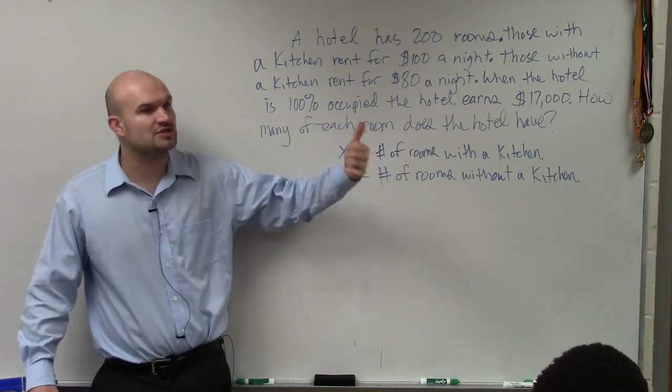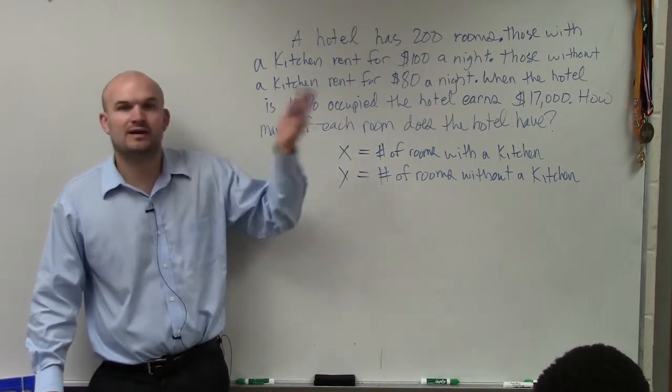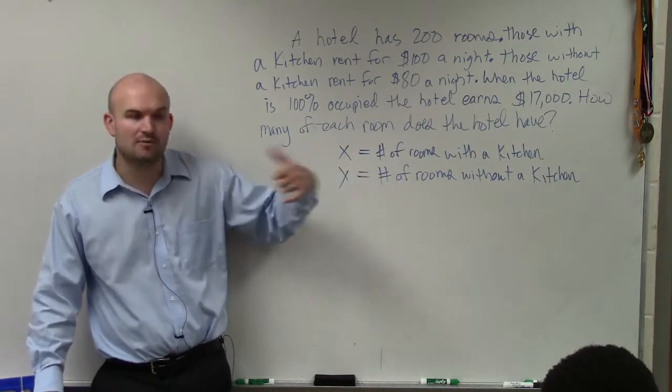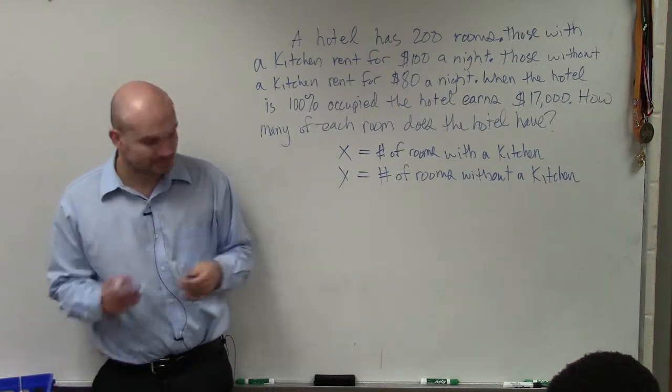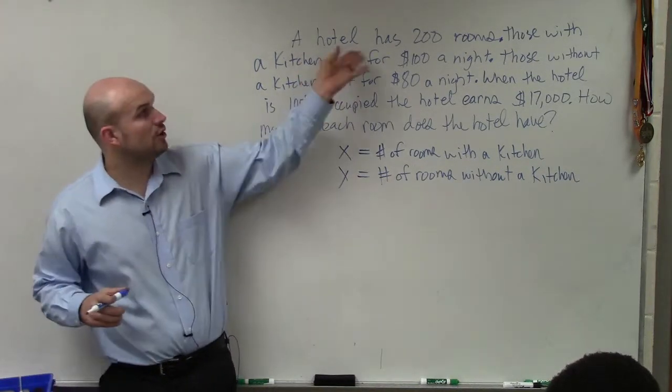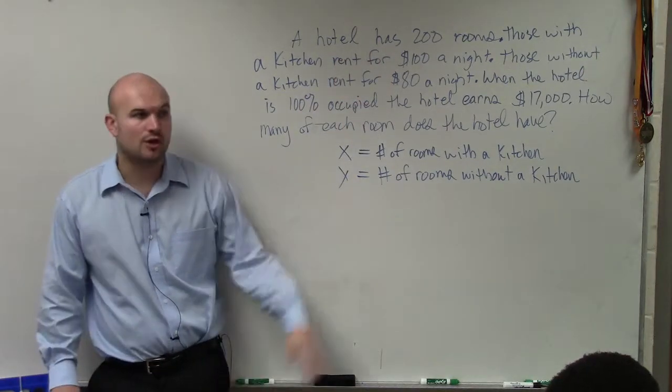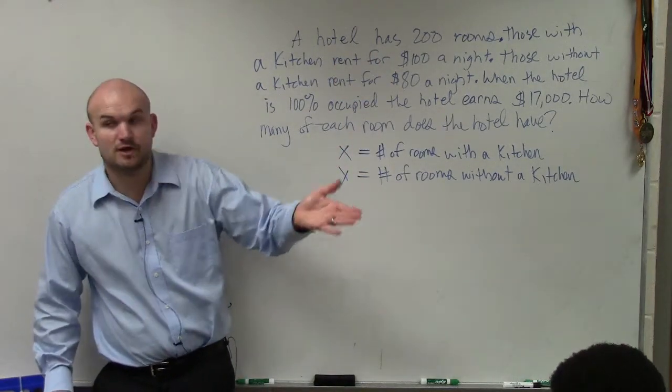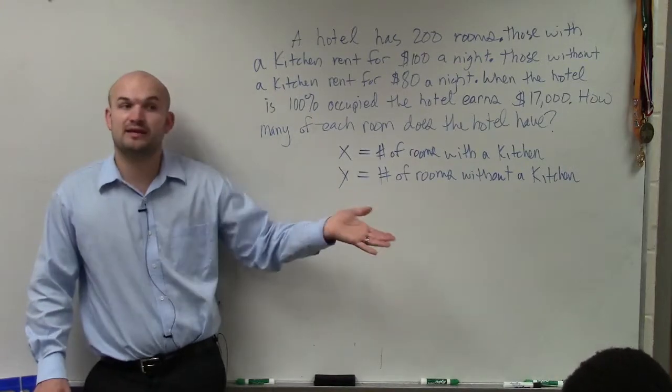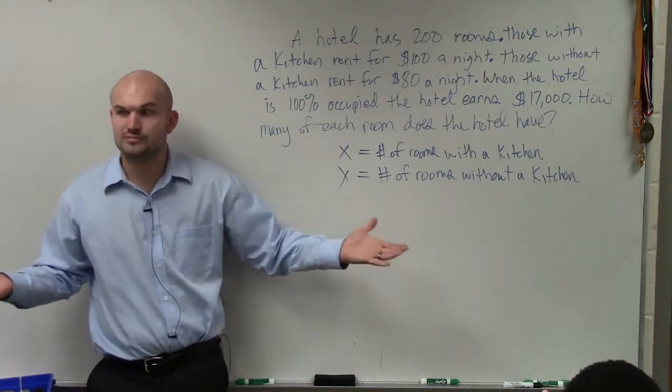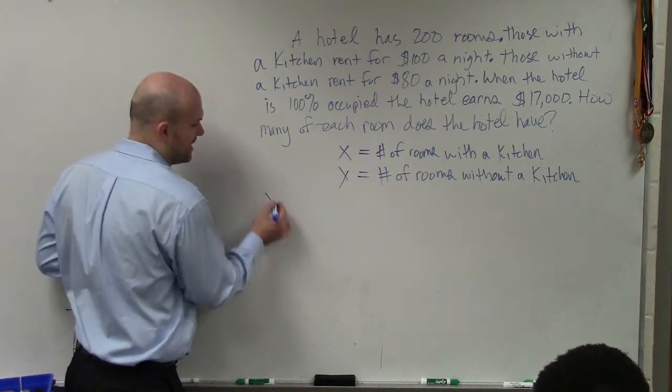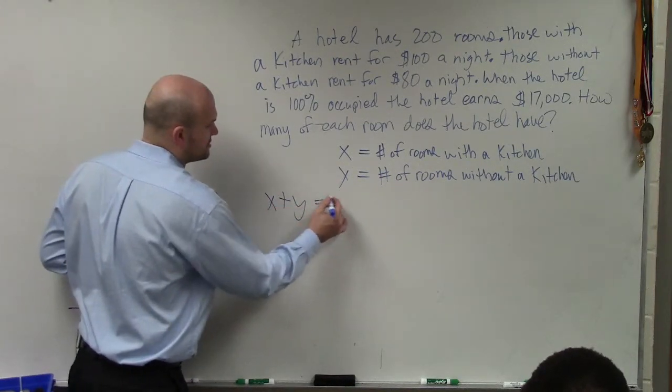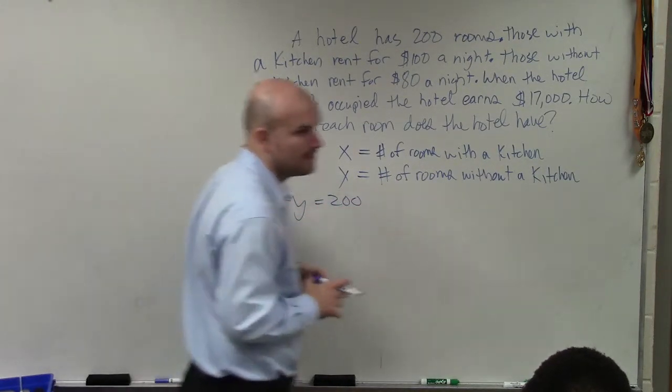Because once we have variables, to solve for variables, we need to create equations. And this is usually the most difficult part of the process, is creating these equations. Well, one equation says the hotel has a total of 200 rooms. So you could have 100 rooms with a kitchen and 100 rooms without a kitchen. That would be 200. So you're adding the number of rooms together. So I can just say x plus y equals 200. That's one equation.